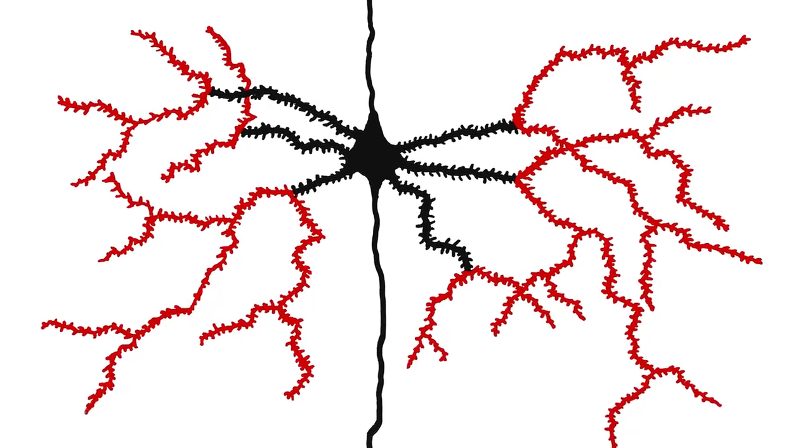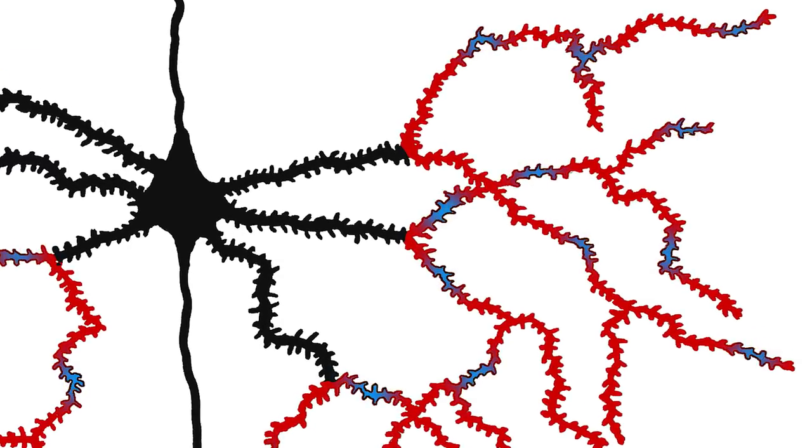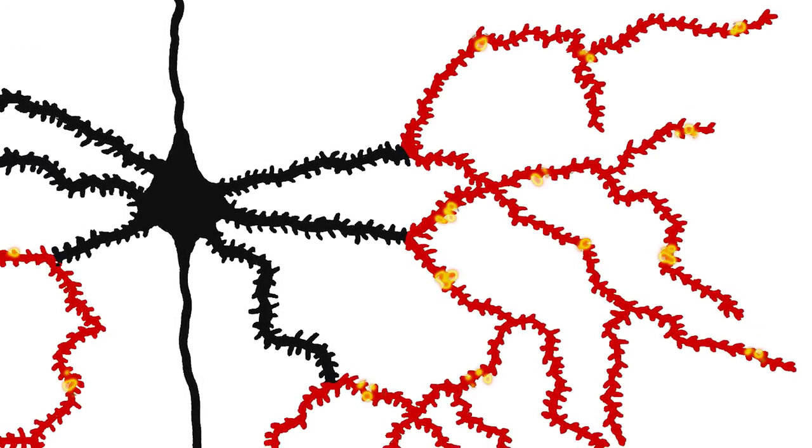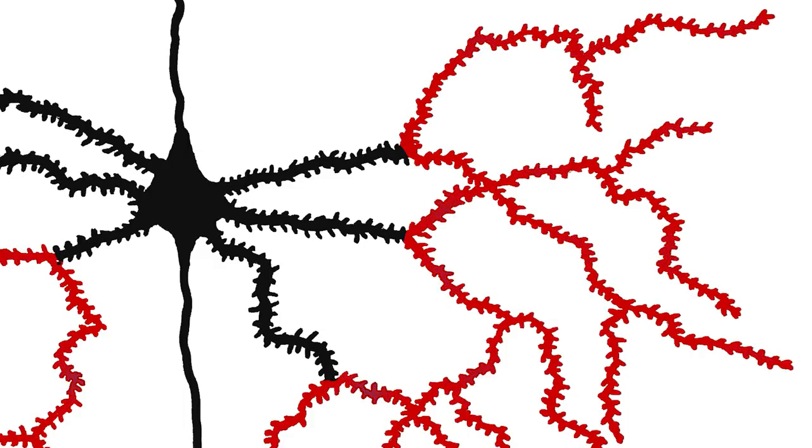Distal dendrites are too far away to affect the voltage at the cell body enough to cause the cell to fire. For years, we didn't understand why neurons had these thousands of synapses.